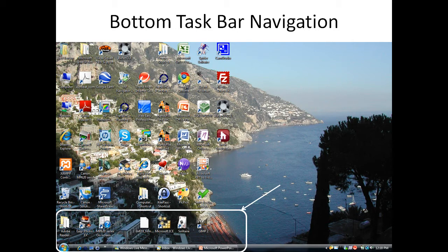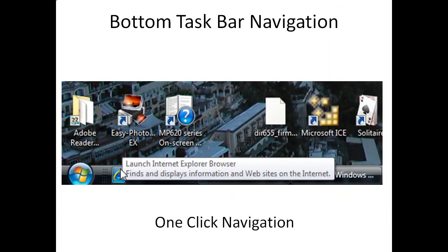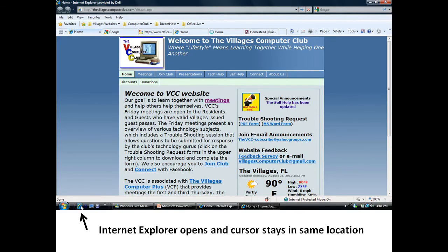There's an easier way to open up a program on your screen. You'll notice there's a bottom taskbar navigation. What you do is single click on the icon on the taskbar — like Internet Explorer. When you do that, Internet Explorer opens in the full window and the cursor stays in the same location.